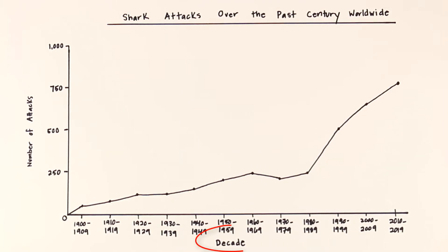Next, read the information on each axis. This will tell you what is being compared. Last, analyze how each line moves up or down. This will tell you the meaning of the graph.